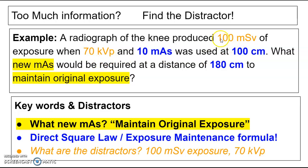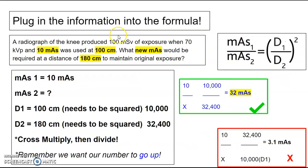And well, I hope they're really not getting 100 millisieverts from a radiograph of the knee, but that was just an example. Okay. So those are in there to distract you to make you think, oh, am I supposed to do the 15% rule? Am I supposed to do the inverse square law? I see a kVp, I see an exposure here. No, the question is asking you for a new mAs, maintain original exposure. So we're going to go direct square law. So you are going to plug the information in. So ignore the distractors. They're there just for fun.